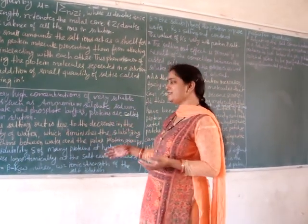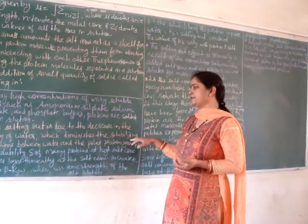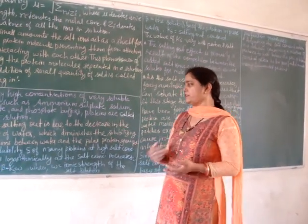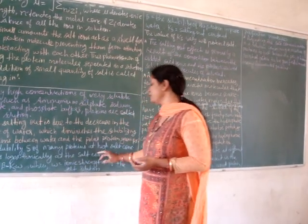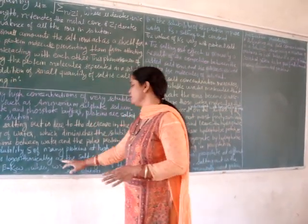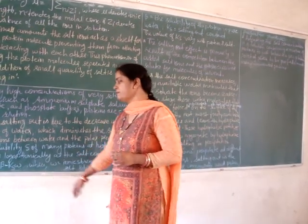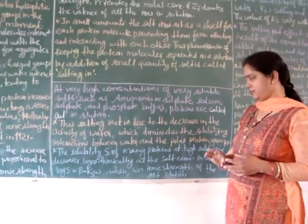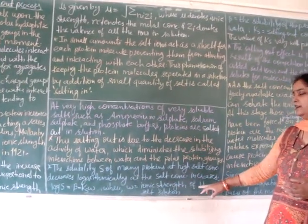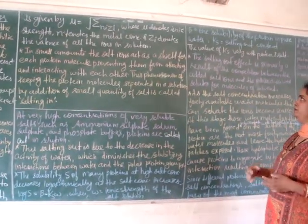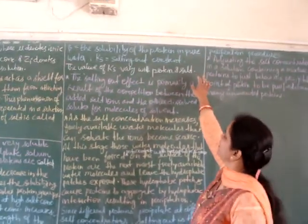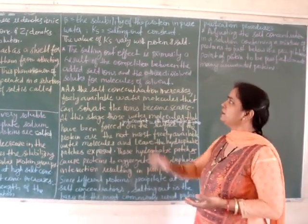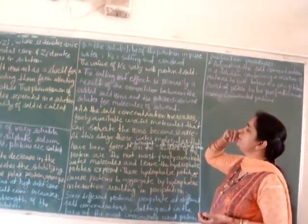Salting out is due to the decrease in the activity of water, which diminishes the solubilizing interaction between water and the protein's polar groups. The solubility S of many proteins at high salt concentration decreases logarithmically as the salt concentration increases, described by the formula: log S = beta minus K_s times W, where W is the ionic strength of the salt solution, beta is the solubility of the protein in pure water, and K_s is the salting out constant. The value of K_s varies with the protein and salt.